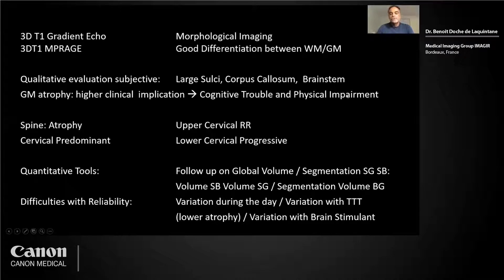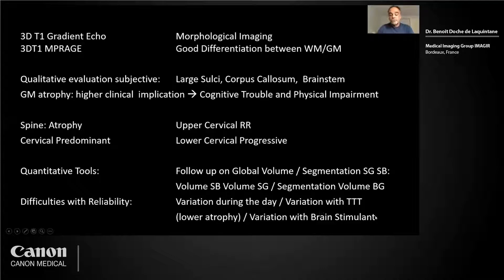Quantitative tools for global volume segmentation of white and gray matter are tricky because variability is difficult. There will be variation during the day of brain volume, variation with treatment — if a treatment is efficient, you will have lower atrophy — and also variation with brain stimulants. So the variability of all of this is quite difficult.